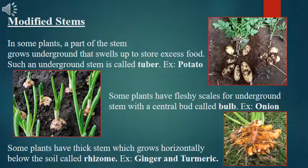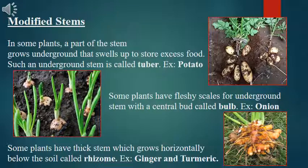Modified stems: In some plants, a part of the stem grows underground and swells up to store excess food. Such an underground stem is called a tuber — for example, potato. Some plants have fleshy scales for an underground stem with a central bud, called a bulb — for example, onion. Some plants have a thick stem which grows horizontally below the soil, called a rhizome — for example, ginger and turmeric.